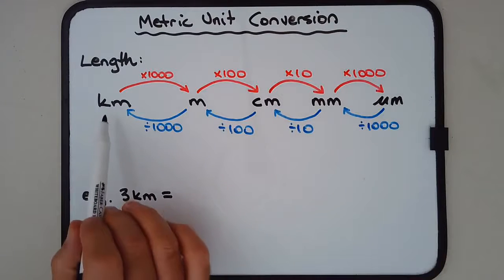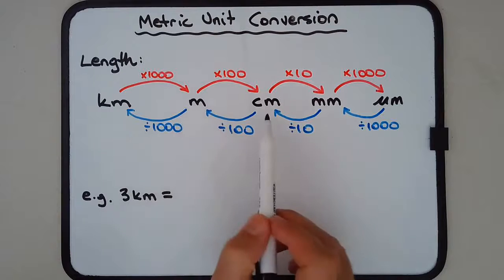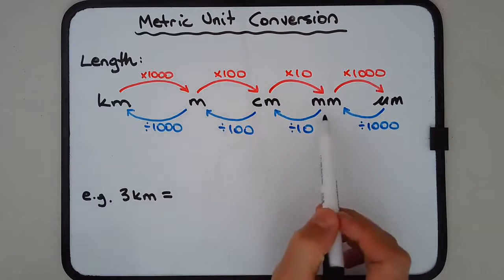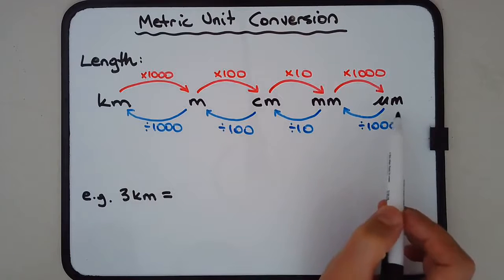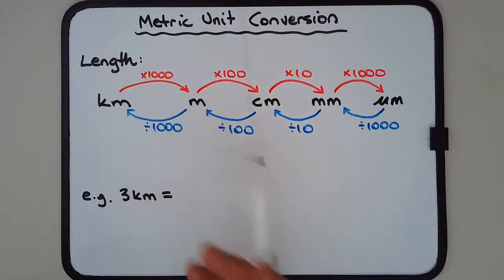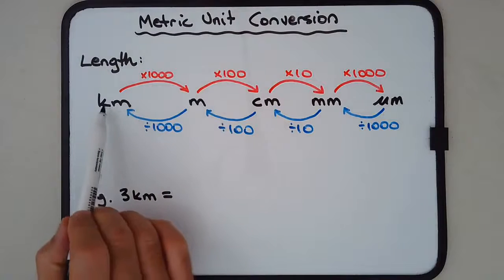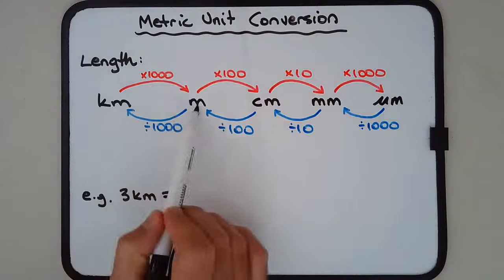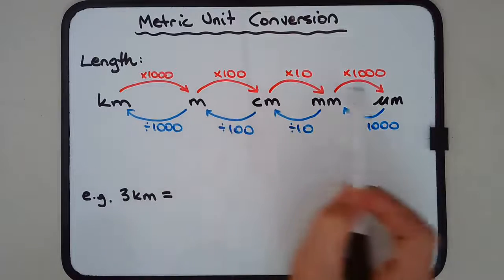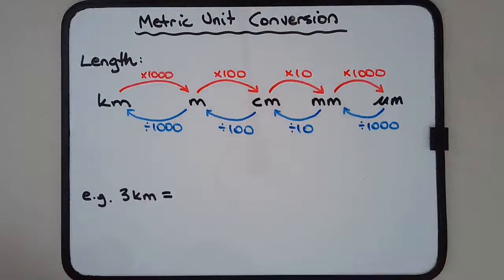For length, we have the kilometer, the meter, the centimeter, the millimeter, and the micrometer. The meter is the standard unit of length used in countries that use the metric system. To go from kilometers to meters, we follow the red arrows — the instructions are on the red arrows.